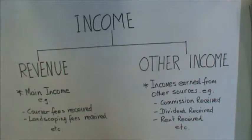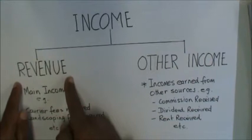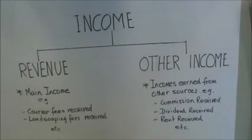Here we're talking about only service businesses — we will look into trading businesses later. So for a service business, the income would be reported as revenue, which is the main source of income. Service businesses can also earn income from other sources; for example, they can sell stuff on someone's behalf, for which they will receive a commission.